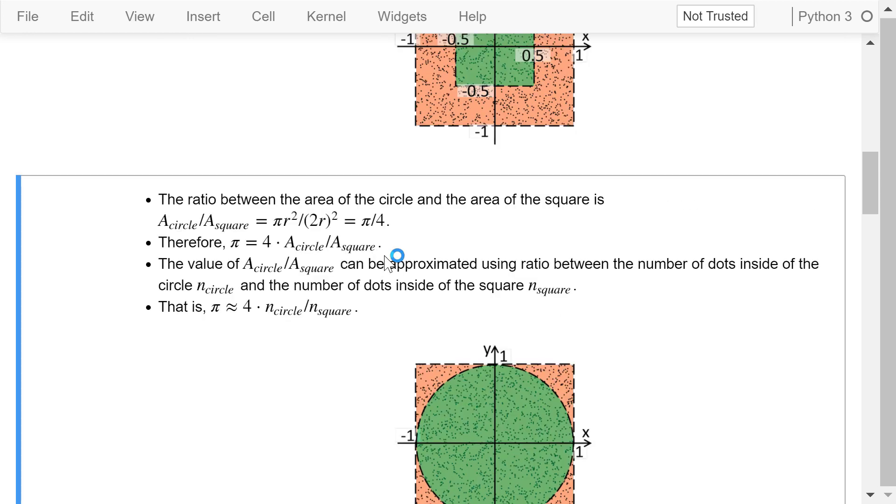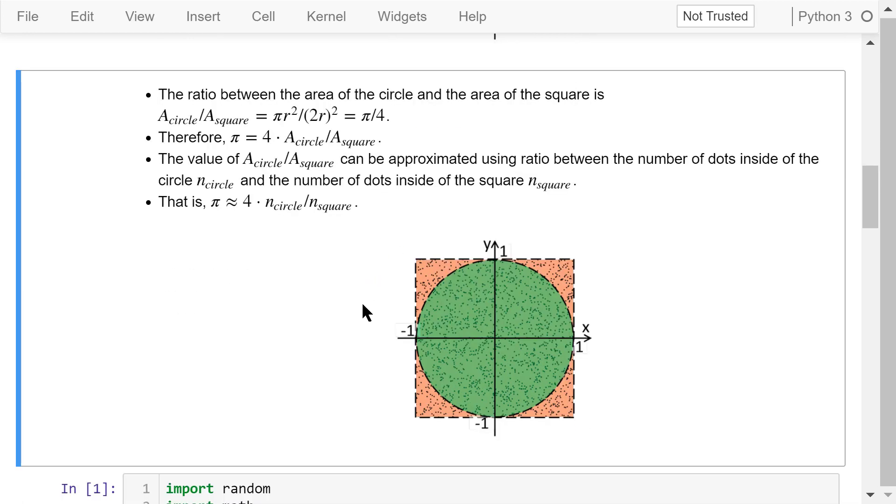Now, consider the following image. The ratio between the area of the circle and the area of the square is area_circle over area_square equals πr² over 2r², which is π over 4.